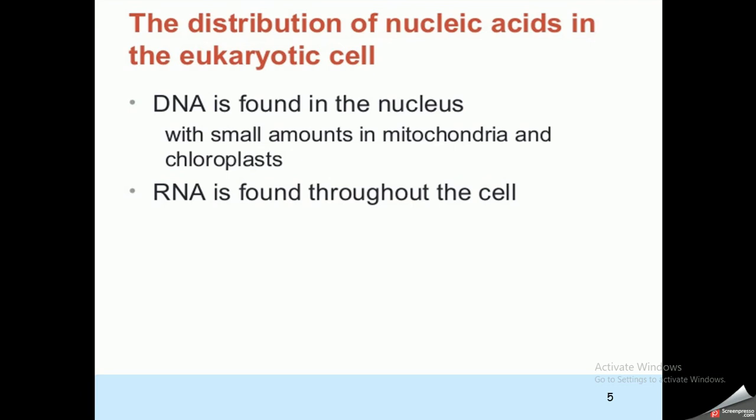In prokaryotic cells, DNA may be found in the nucleoid region, though there's no defined nucleus. DNA may also exist as plasmids, and RNA is also present.